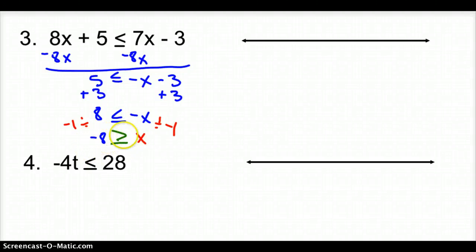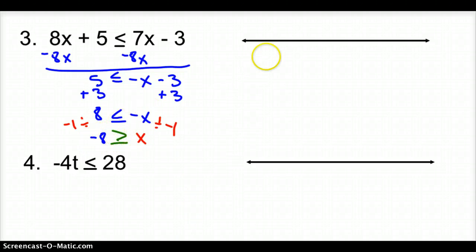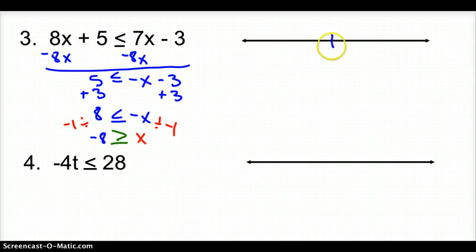So negative 8 is greater than or equal to x. Remember: when we divide or multiply by a negative, we flip the inequality and change the sign. Now let's graph this. You'll need to draw your own number line — I already have one, so you have to draw yours.